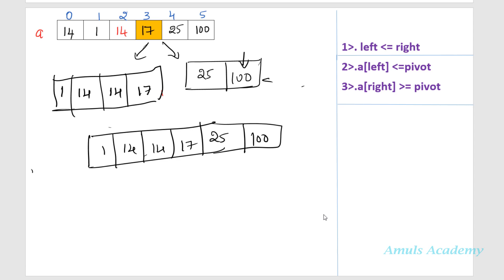Hello guys and welcome to Python programming tutorials by Amuls Academy. This tutorial is the continuation of the previous tutorial, in which we discussed about the quicksort algorithm and how to sort numbers in ascending order by taking the last element as the pivot element. In this tutorial we will see how to select the first element as the pivot, how to take a random element, as well as how to take the median of three values as the pivot element, and how to arrange numbers in descending order.